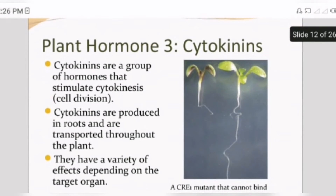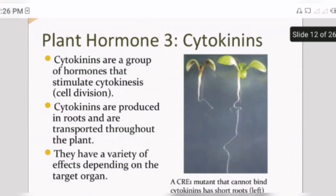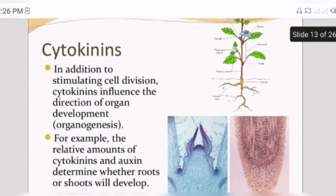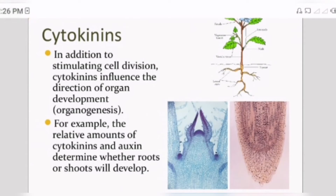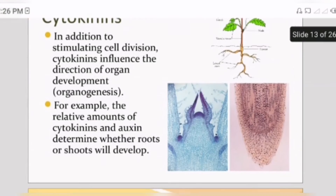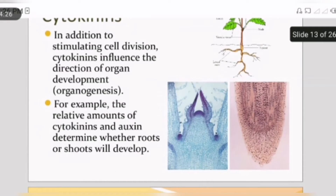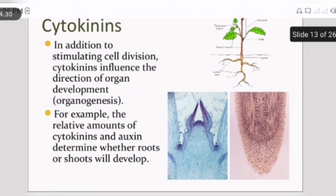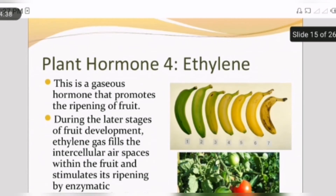Third is cytokinins. Cytokinins are a group of hormones that stimulate cytokinesis, which is the process of cell division. As we look at huge trees with new small leaves, this process is cytokinesis. A second process that occurs with the help of cytokinins is organogenesis — the direction of organ development. For example, the relative amount of cytokinins and auxin determines whether roots or shoots will develop.